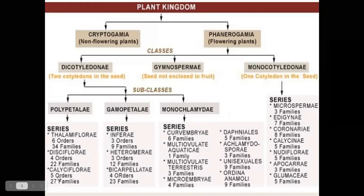The last series of polypetale is calyciflorae. The initial orders of calyciflorae are perigynous, with a half superior or half inferior ovary, while the end orders are epigynous, with an inferior ovary. The calyciflorae is classified into five orders and 27 families.